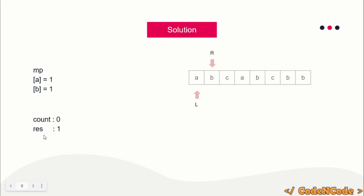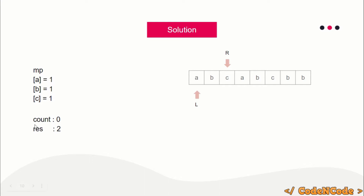Count is zero, so we increment R and add 'c'. Frequency of 'c' has not become two, so count stays zero. Current substring length is three, so result becomes three. Now R increments again, adding another 'a'. Frequency of 'a' becomes two, so count increments to one. Since count is not zero, the range is invalid and we cannot maximize result.